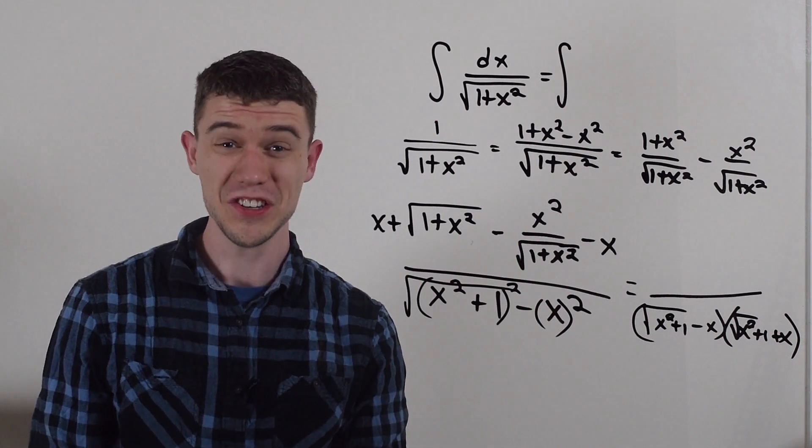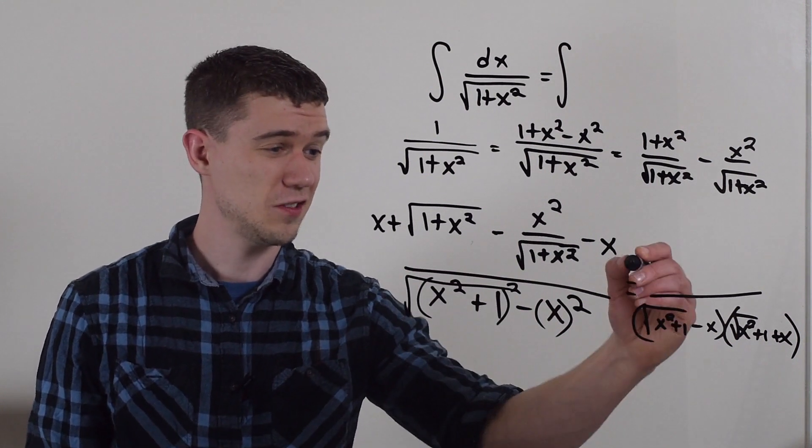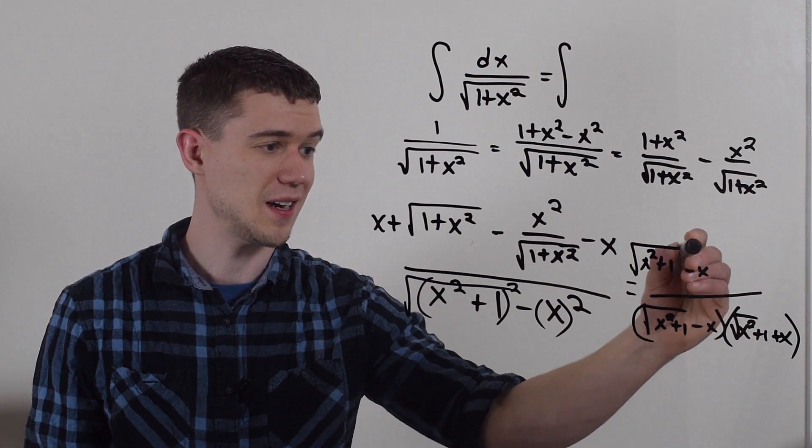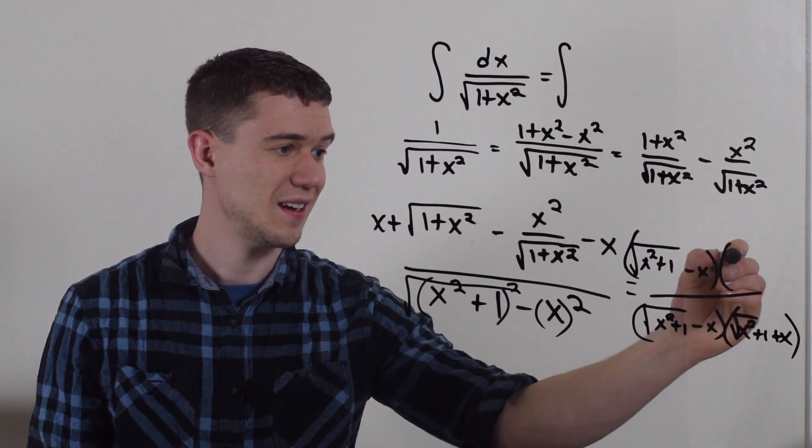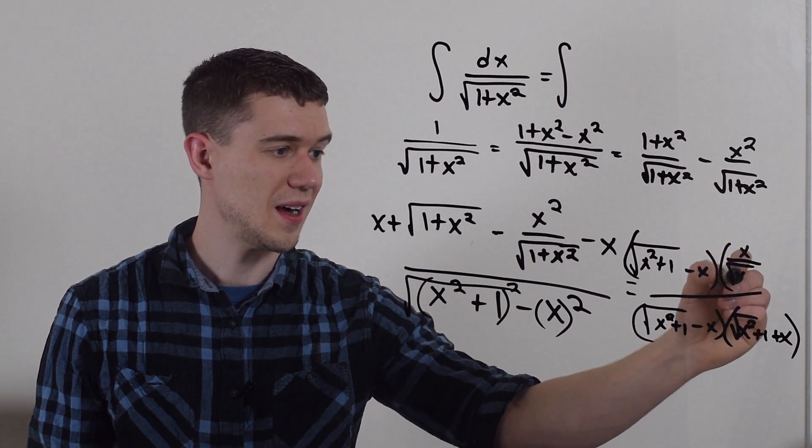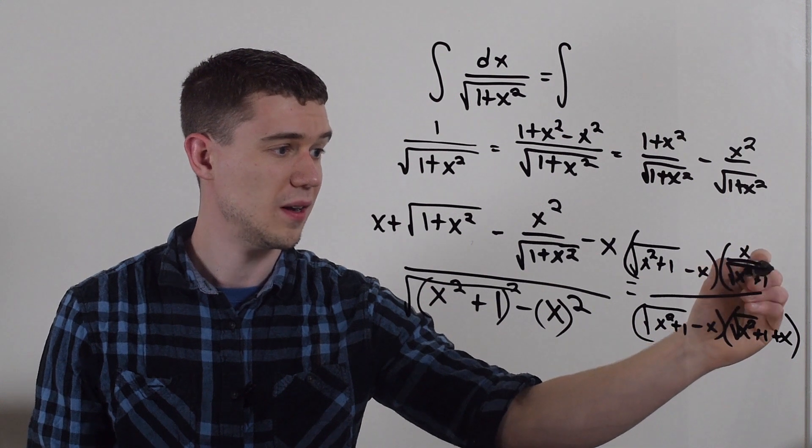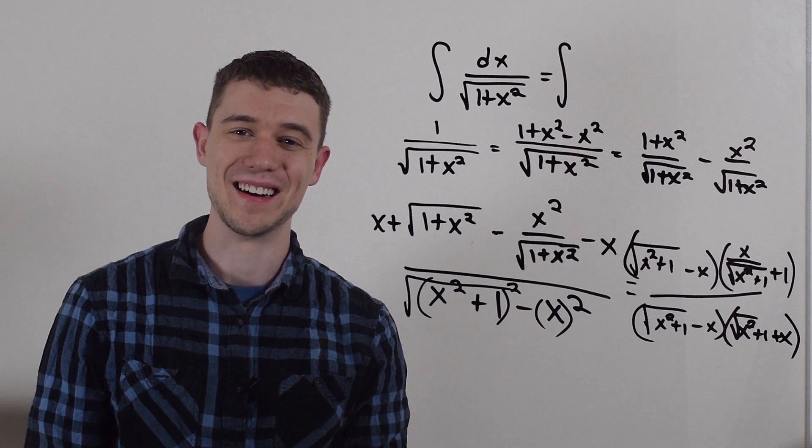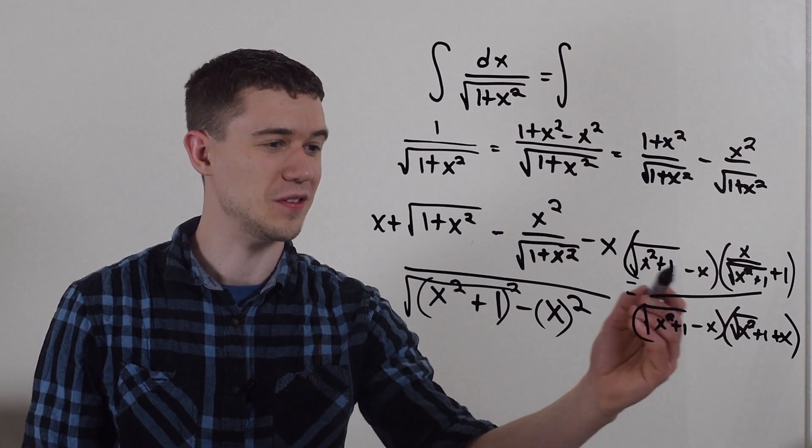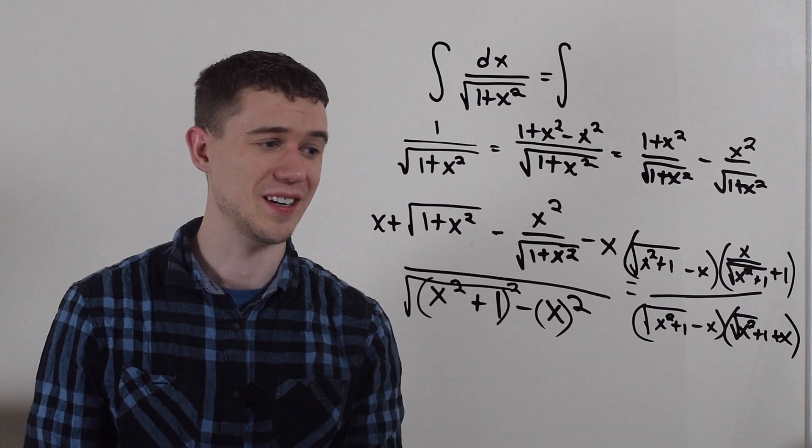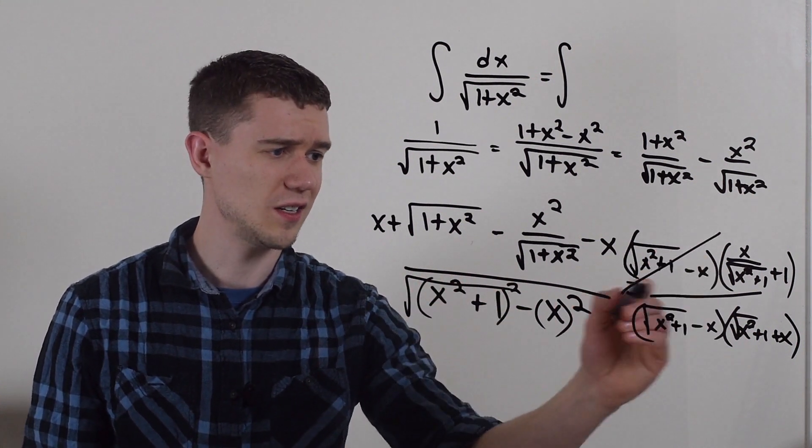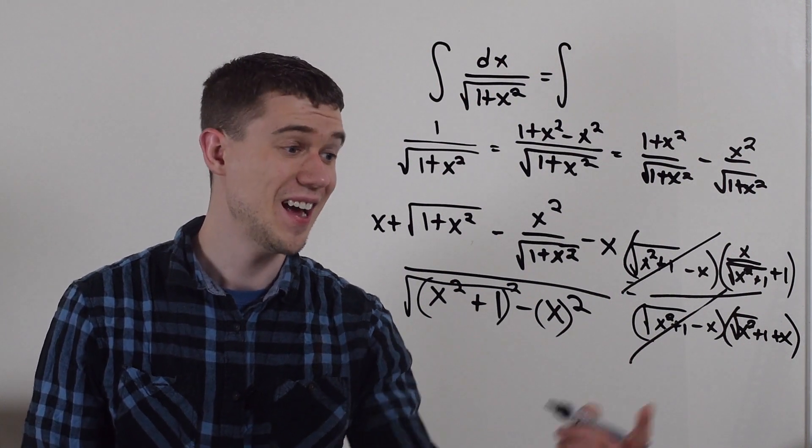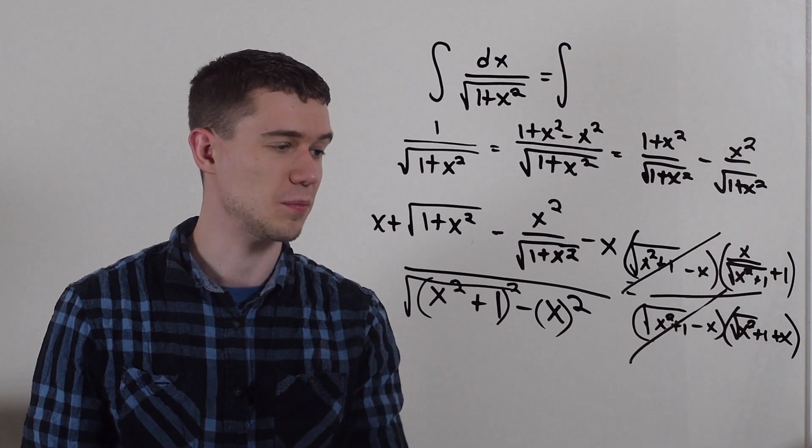Now, the numerator also factors similarly. This numerator is going to factor into root x squared plus 1 minus x times x over root x squared plus 1 plus 1. And I'm not going to look too hard into that. You can check pretty easily if you distribute all of this. You're going to get this quantity. And would you look at that, this actually cancels out. This conjugate term just cancels right out. And so I get this weird looking expression.